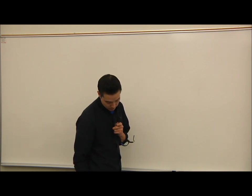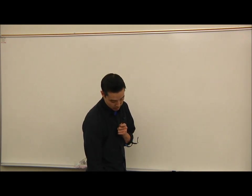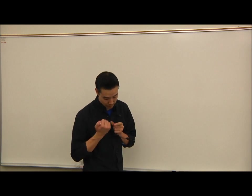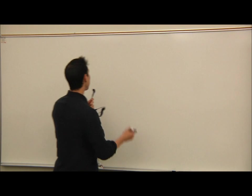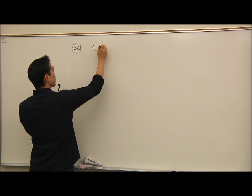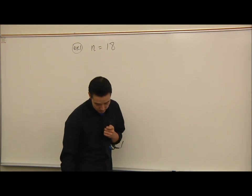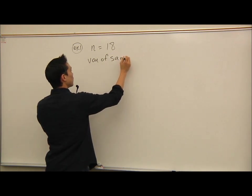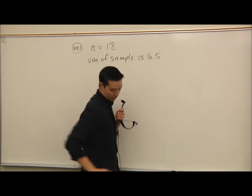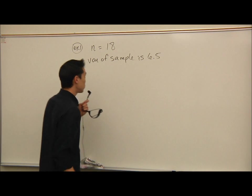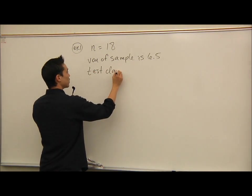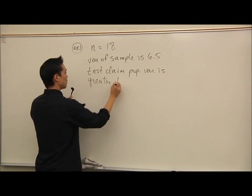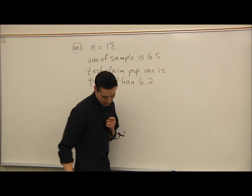All right. Let's do an example or two. 18 containers of fruit punch are selected, and each is tested to determine its weight in ounces. The variance of the sample is 6.5. Test the claim that the population variance is greater than 6.2 at alpha equals 0.01. So we're looking at 18 fruit containers. So I'm just going to write down the basic information. N was 18. We looked at 18 fruit containers. And we're studying the variance. It says the variance of the sample was 6.5. So variance of sample. 6.5. It says test the claim that the population variance is greater than 6.2. So test claim population variance is greater than 6.2. And it says to use alpha at 0.01.